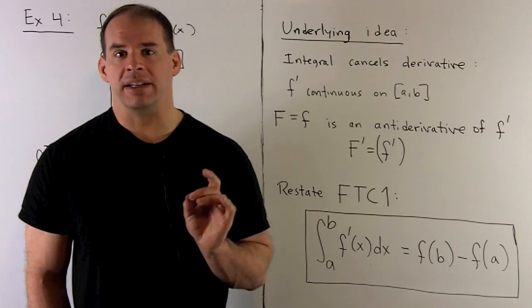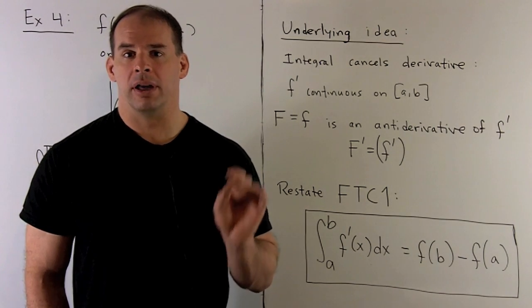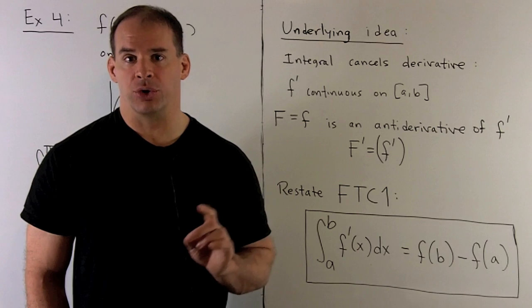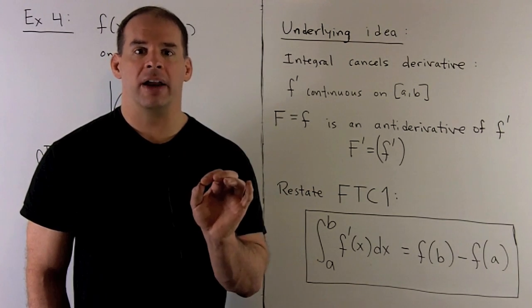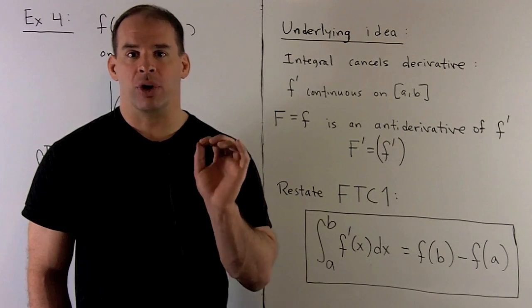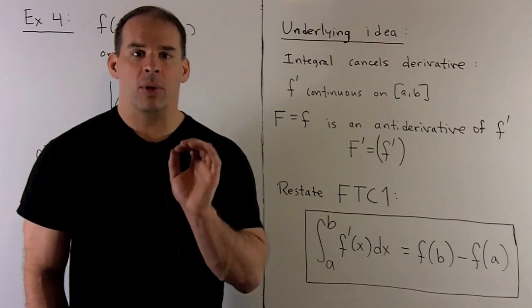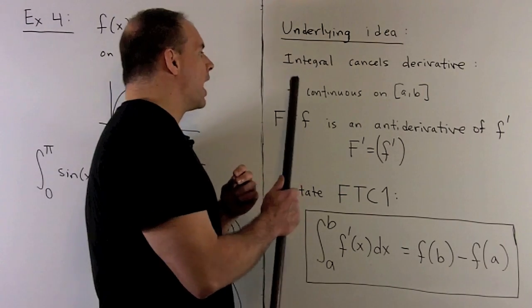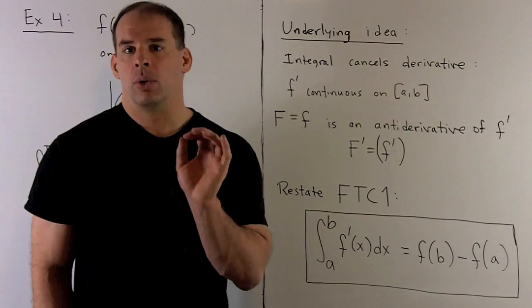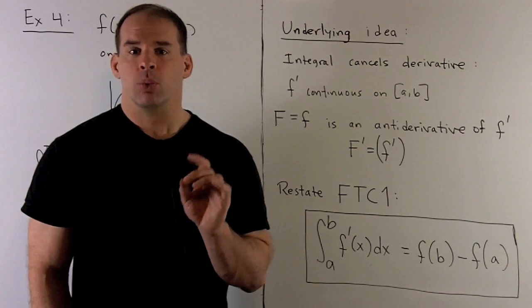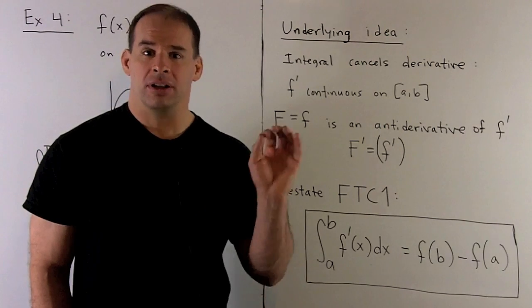To get a better idea of what's happening with the Fundamental Theorem of Calculus, I'm going to restate the theorem in a way that makes no reference to antiderivatives. We take little f the integrand, assume it's already a derivative, and replace it with little f prime. The condition is that f prime is continuous on the interval [a, b]. The function little f has as its derivative little f prime, so little f is an antiderivative of little f prime.